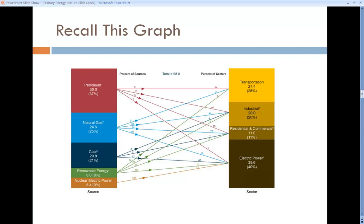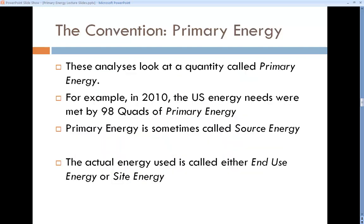The actual kilowatt-hours of electricity is much smaller because so much electricity comes from thermal plants. That 98 quads for the country from 2010 meant 98 quads of primary energy. We also call it source energy. The other side is the actual energy used, either site energy or end-use energy.